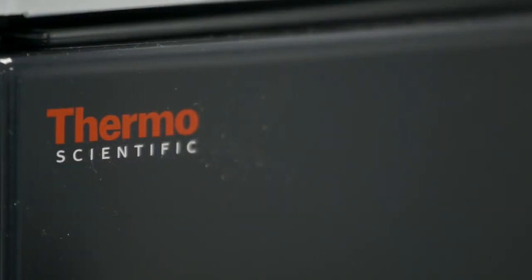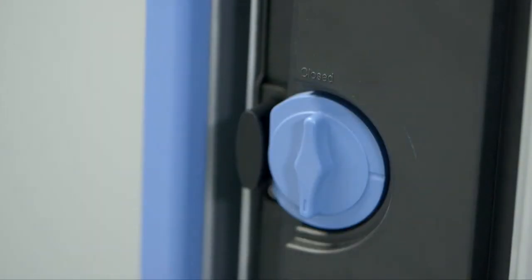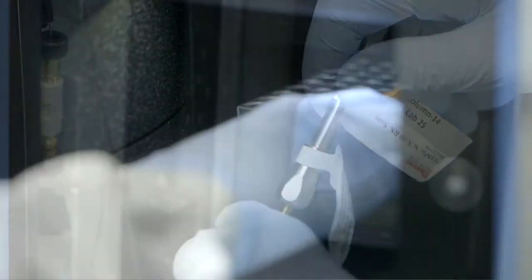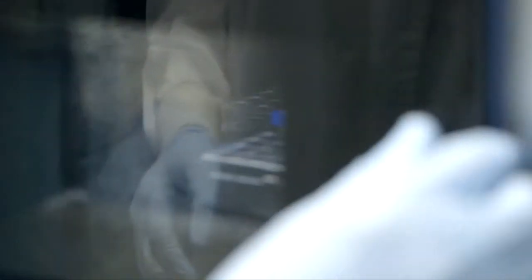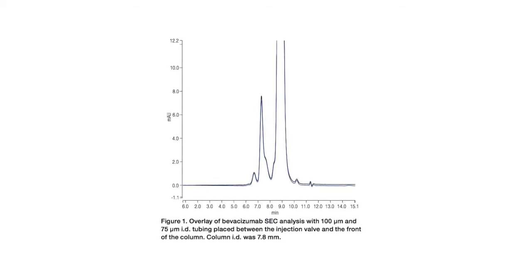In this application, a low dispersion biocompatible Thermo Scientific Vanquish Flex UHPLC system and Thermo Scientific MABPAC SEC-1 column was used to evaluate the effects of pre-column dispersion, sample volume, and solvent addition on size exclusion chromatography. It was observed that SEC is prone to effects of pre-column dispersion when column internal diameter was reduced to 4 mm and flow rate to 300 µL per minute.